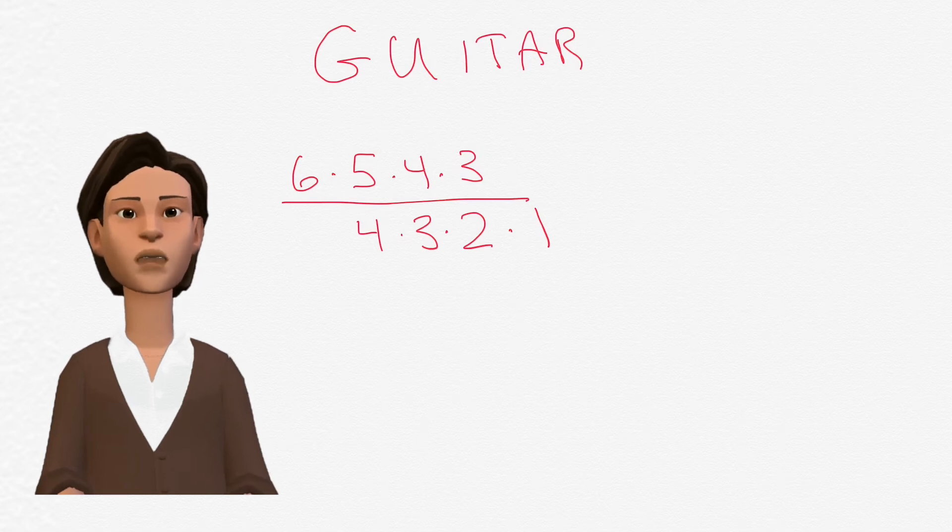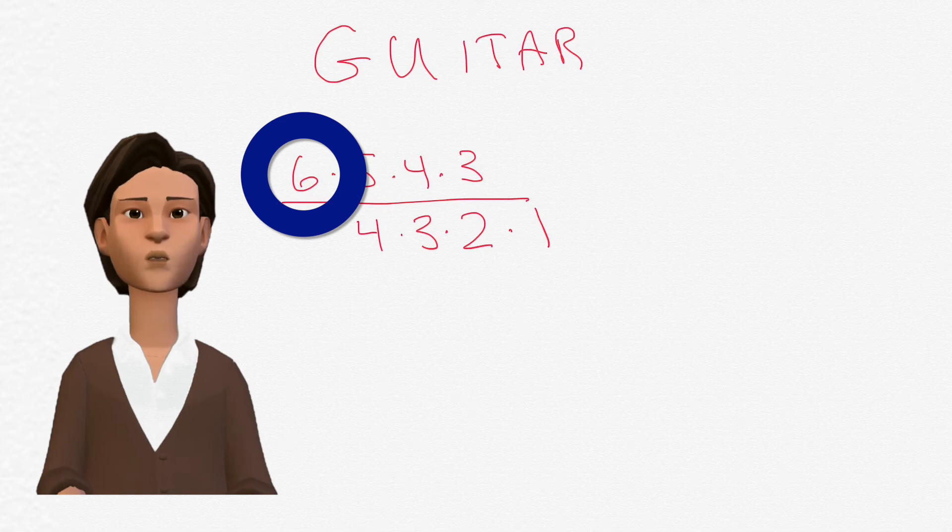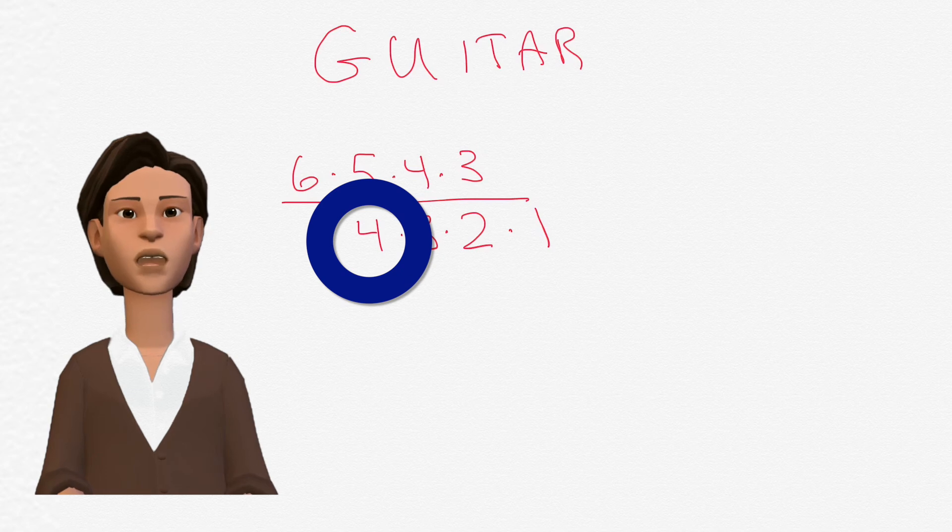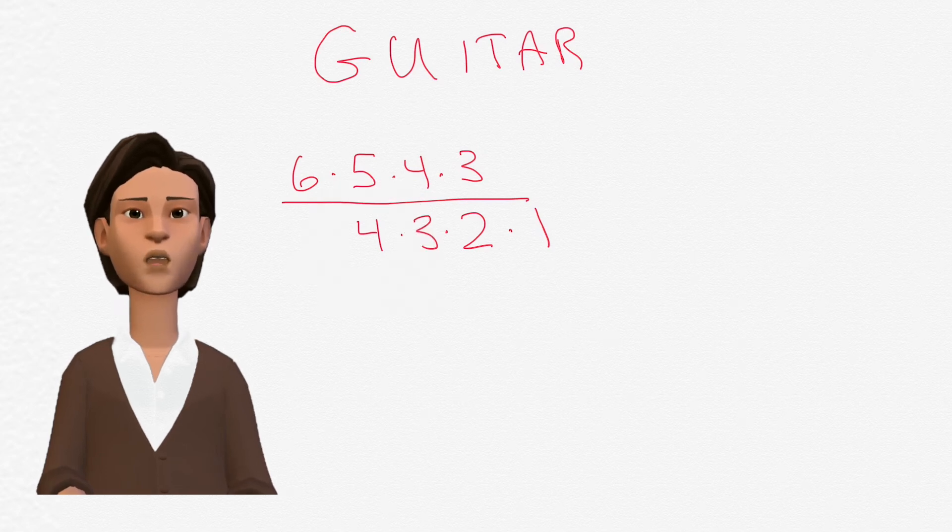For the numerator, which is the permutations, we started with the number six because that was the total letters in the whole word. For the denominator, we start with the number four because we are only trying to sort out the arrangements that we have in the numerator.